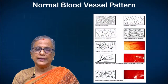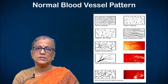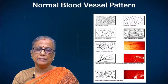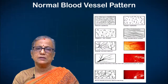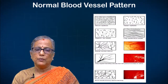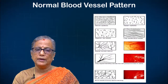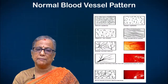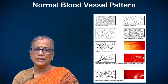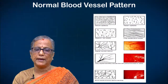The next step in colposcopy is to observe the blood vessel pattern, after ensuring the cervix is not covered with mucus or profuse discharge, which can be mopped away using a wet saline-soaked swab. The picture here shows the normal blood vessel pattern.